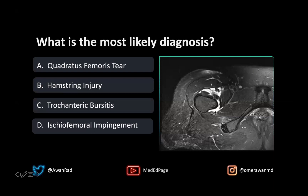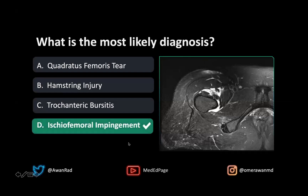The distance between the lesser trochanter and the ischiotuberosity — this here is the ischiotuberosity — is decreased compared to a normal individual. So the best answer here is ischiofemoral impingement. This occurs when there's a decreased distance between the lesser trochanter and the ischiotuberosity, and you can often get edema or even atrophy of the quadratus femoris muscle.